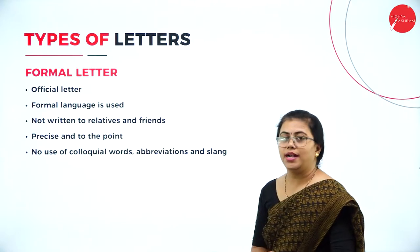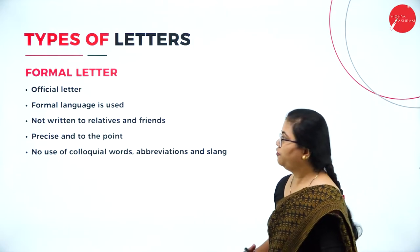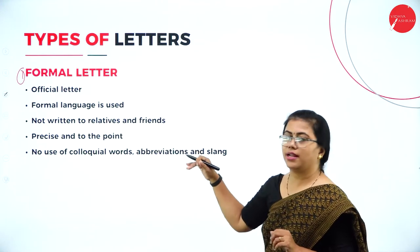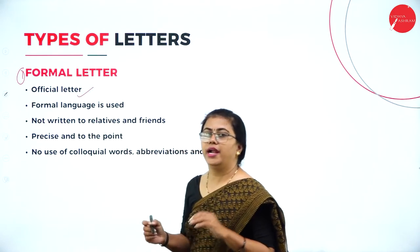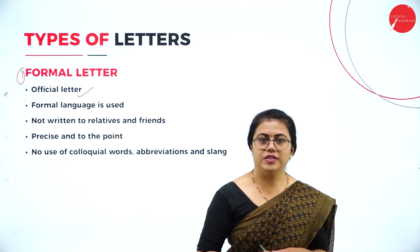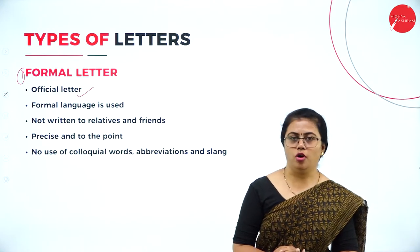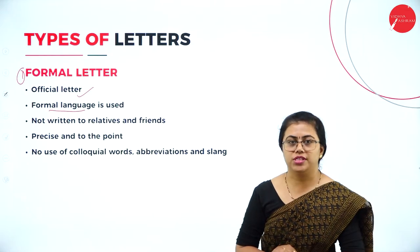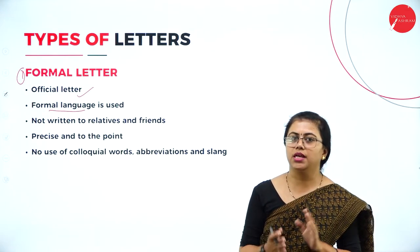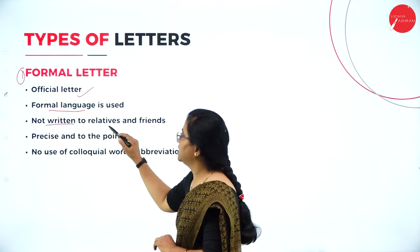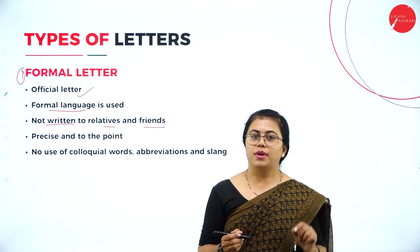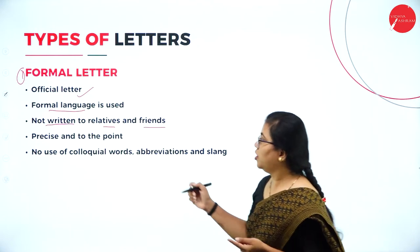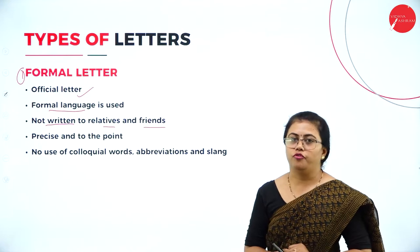Now let us understand the different types of letters. First, we have the formal letter. This is an official letter written at the official level only. Whenever you are writing to some officers, be it government or private, it is written to some official. The language used will be very formal — very sophisticated, courteous, and polite. We cannot write this to relatives or friends. We write it only to officials, private or government, not to relatives and friends.